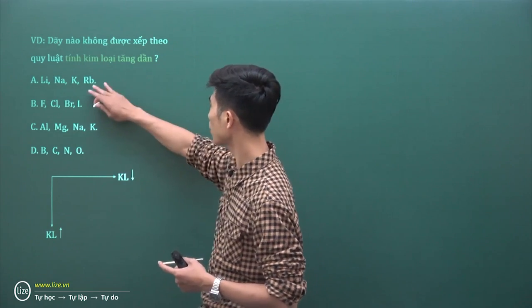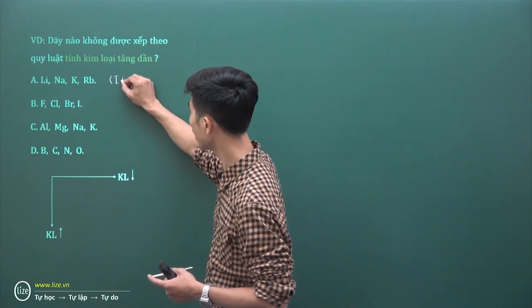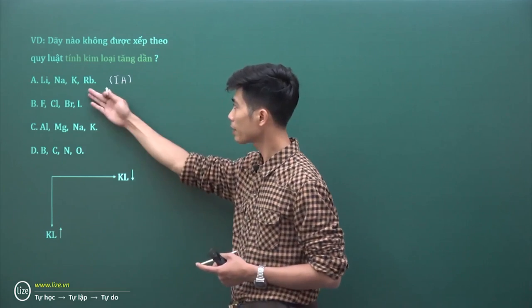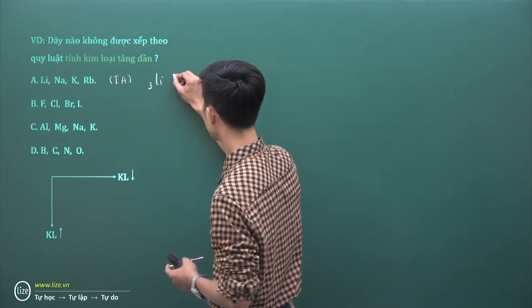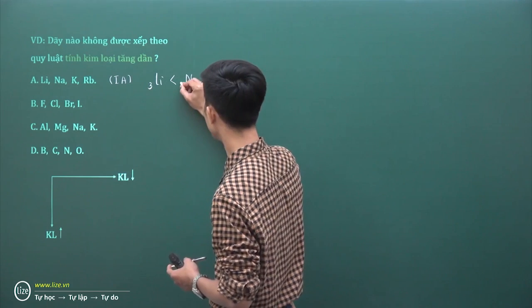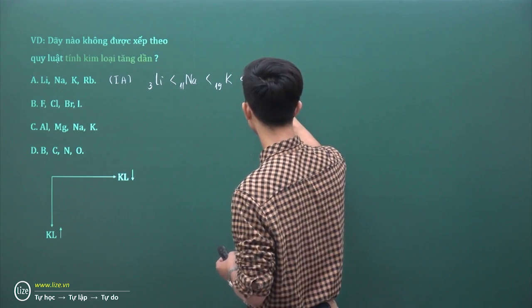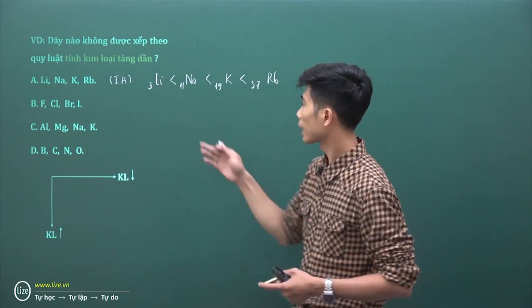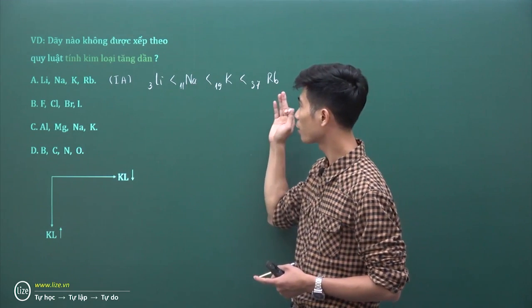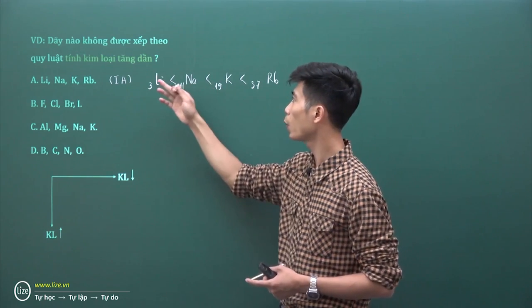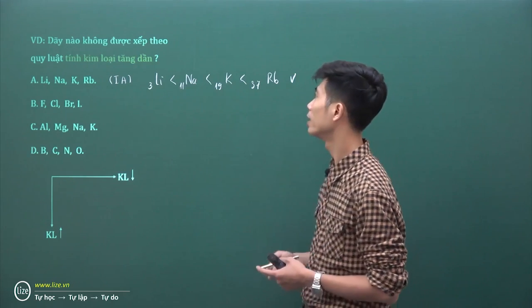Đáp án A gồm các nguyên tố Liti, Natri, Kali và Rubidi - đều thuộc nhóm 1A. Sắp xếp theo chiều tăng dần điện tích hạt nhân: Liti Z=3, Natri Z=11, Kali Z=19, Rubidi Z=37. Bốn nguyên tố cùng một nhóm A, sắp xếp theo chiều tăng dần của điện tích hạt nhân, nên dãy A đúng theo quy luật tính kim loại tăng dần.